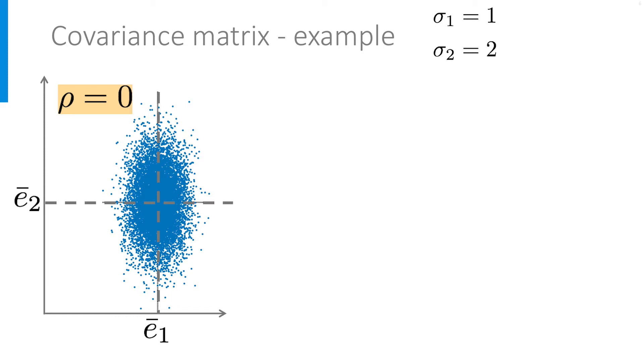But since the two variables are uncorrelated, rho is zero, knowing the outcome of e2 does not give a clue on the expected outcome of e1. It may take a quite large range of values as visualized by the red line.